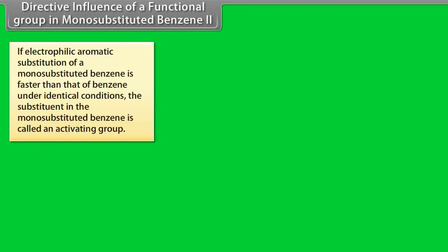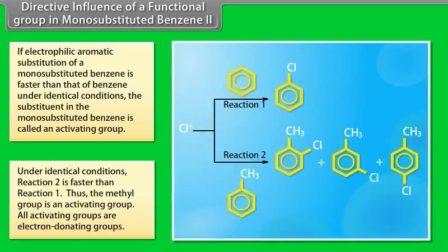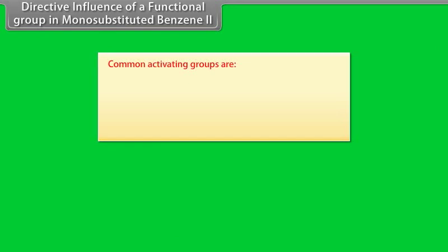Directive influence of a functional group in monosubstituted benzene 2. If electrophilic aromatic substitution of a monosubstituted benzene is faster than that of benzene under identical conditions, the substituent of the monosubstituted benzene is called an activating group. Under identical conditions, reaction 2 is faster than reaction 1. Thus, the methyl group is an activating group. All activating groups are electron donating groups. Common activating groups are...